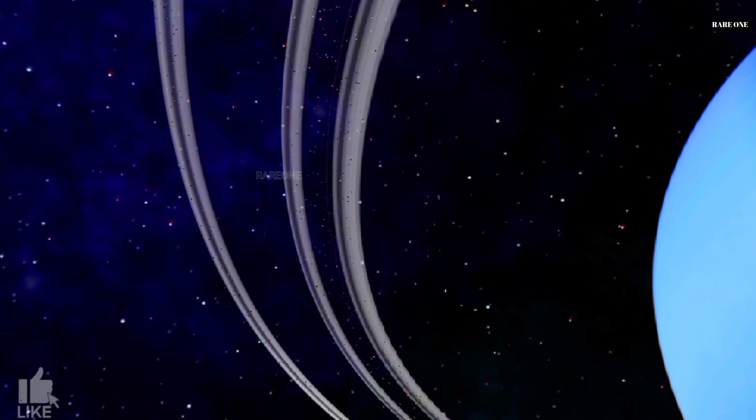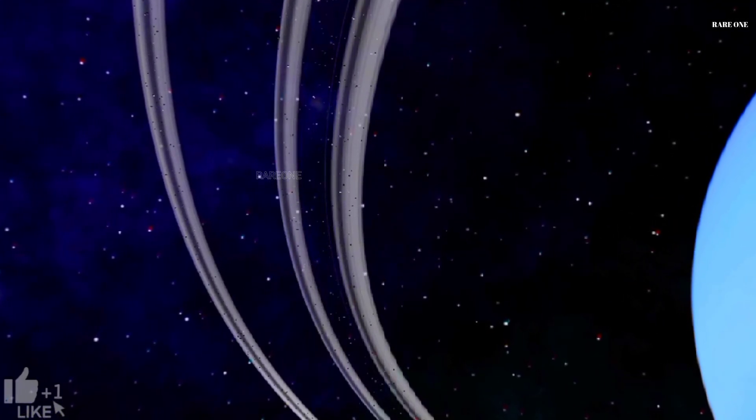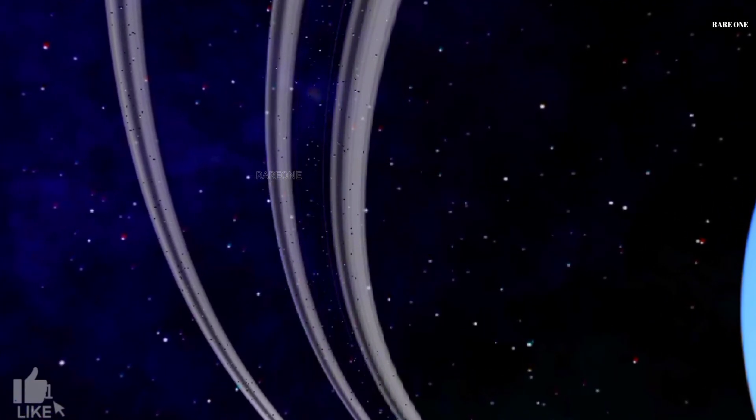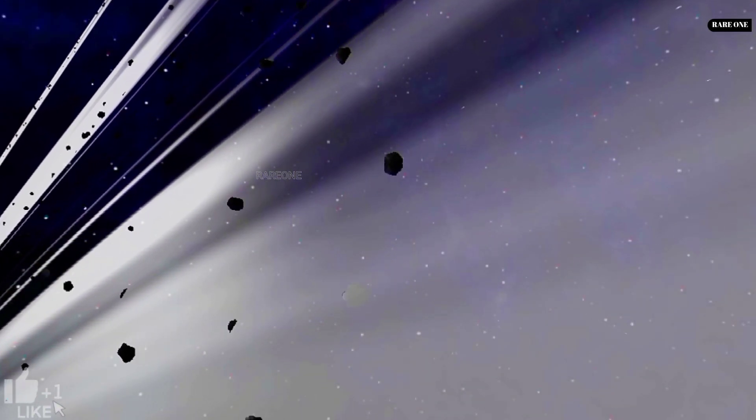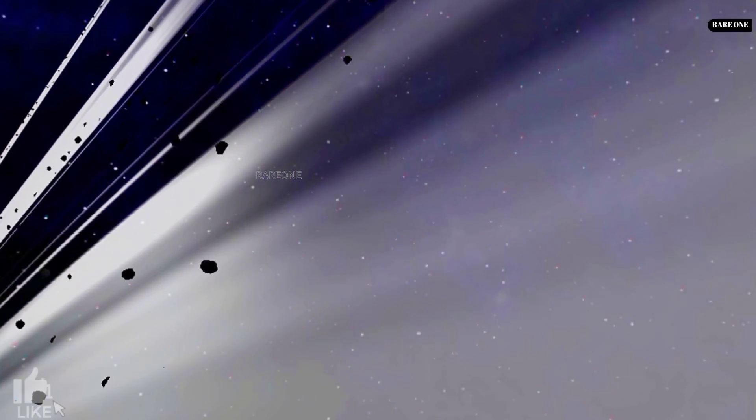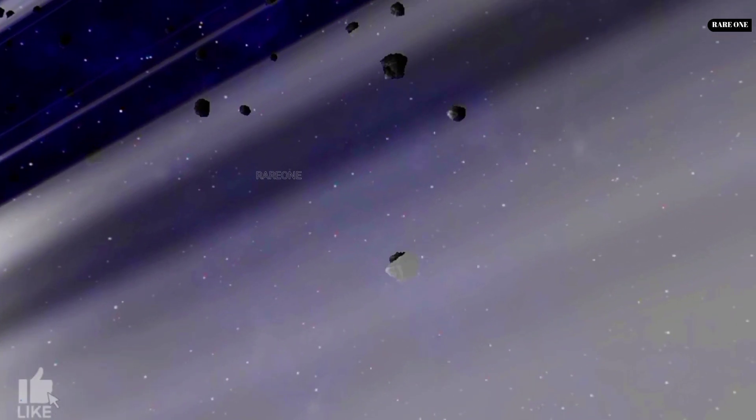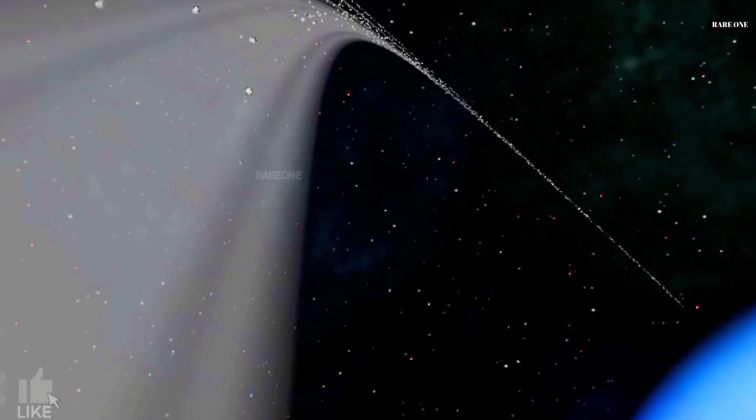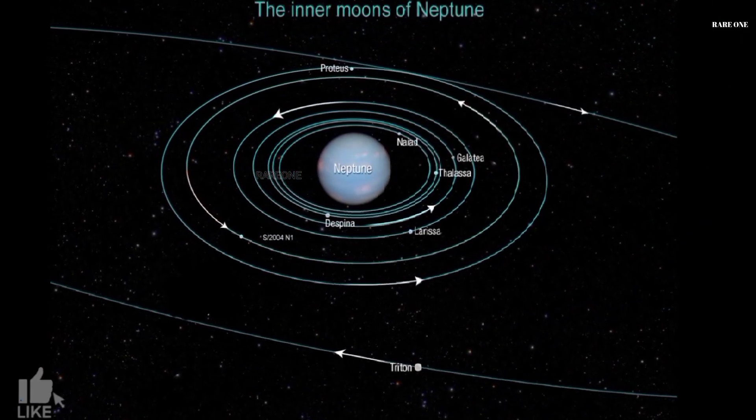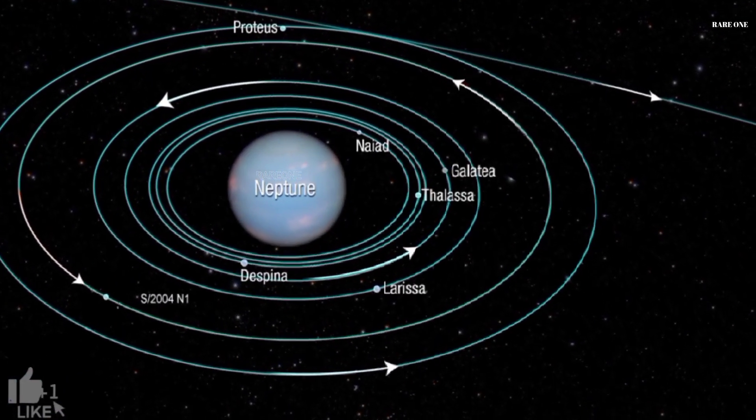In addition to its moons, Neptune is encircled by at least five main rings and four peculiar ring arcs. These clumps of dust, named Liberte, Egalite, Fraternite, and Courage, defy the laws of motion by remaining tightly clustered rather than spreading out evenly. Scientists now believe the gravitational influence of Neptune's moon Galatea helps stabilize these strange arcs.